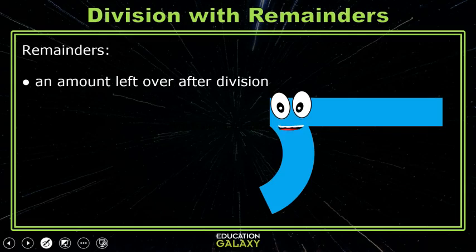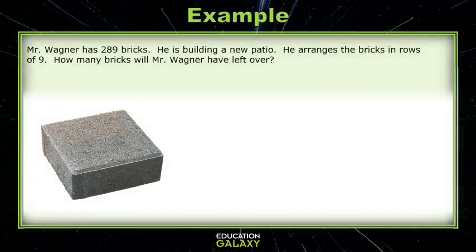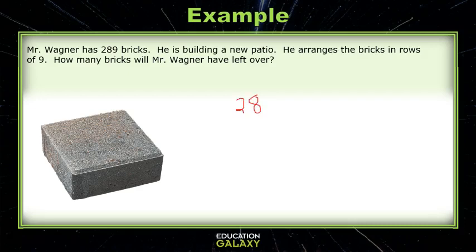Let's look at division with remainders. A remainder is an amount left over after division. This problem says Mr. Wagner has 289 bricks. He is building a new patio. He arranges the bricks in rows of 9. How many bricks will Mr. Wagner have left over? Since we're given the total and we're splitting the 289 total into groups of 9, we want to know how many groups we will have. We want to divide: 289 divided by 9.